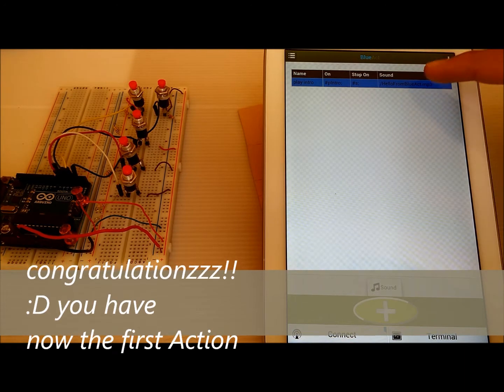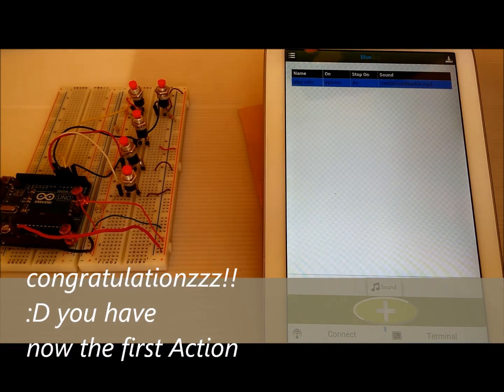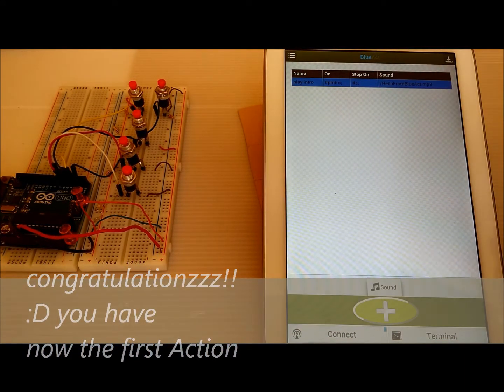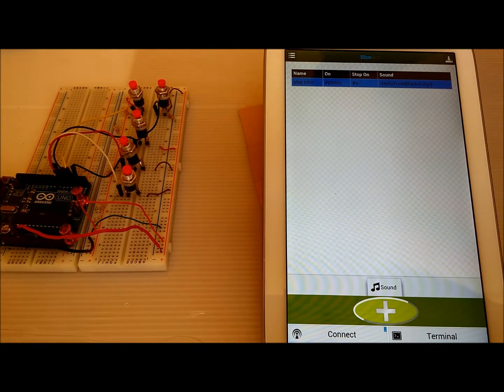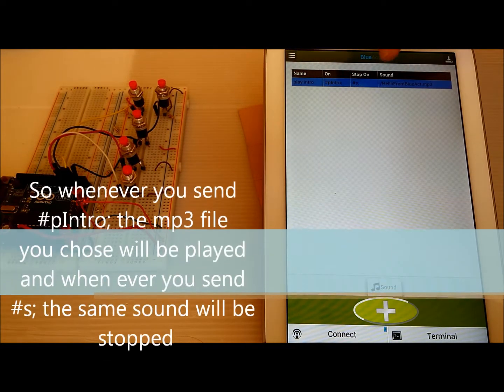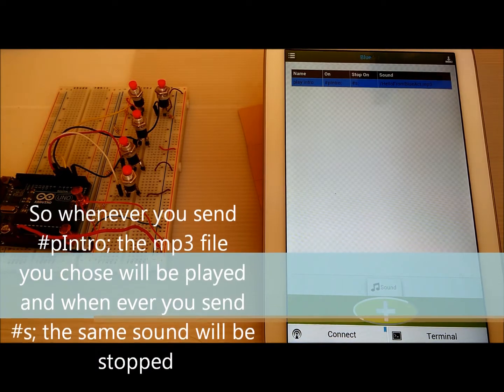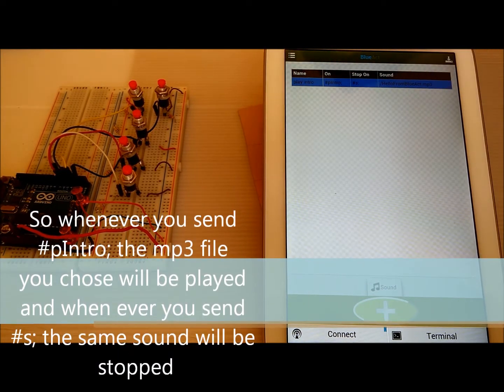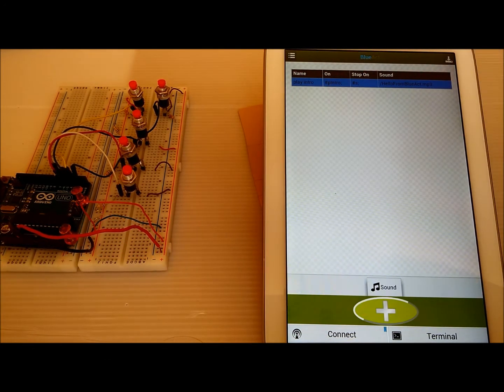Now we have an action, of course it's sound action. The name is play intro. The sound will be played, or hello from blue act.mp3 will be played when the application receives hash P enter semicolon, and it will be stopped when this application receives hash S semicolon.